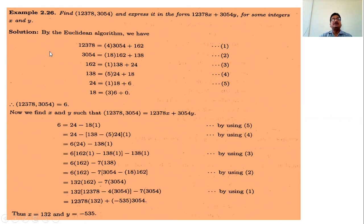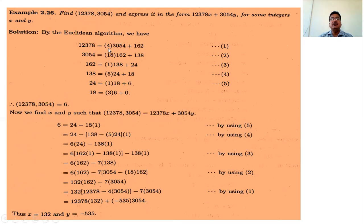Obviously we are going to use the Euclidean algorithm — divide the larger number by the smaller number. That is, divide 12378 by 3054. Using a calculator, the quotient is 4 point something, so the quotient is 4. Then 12378 minus 3054 times 4 gives a remainder of 162.